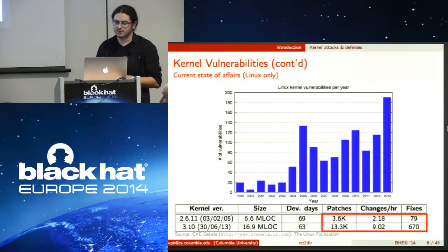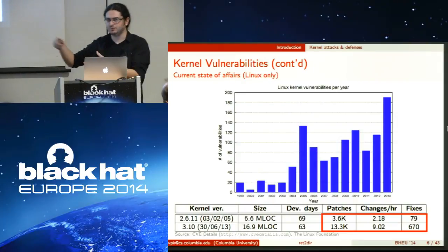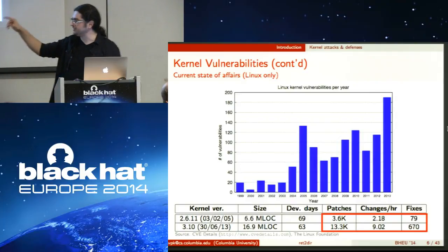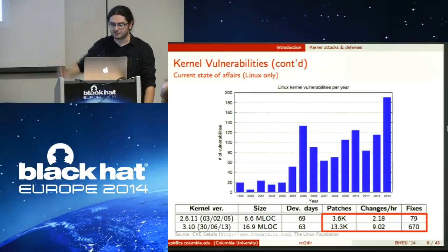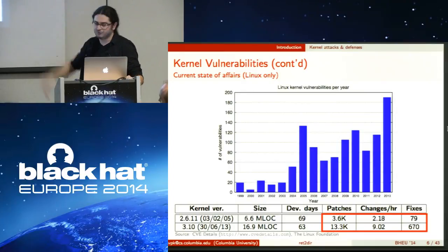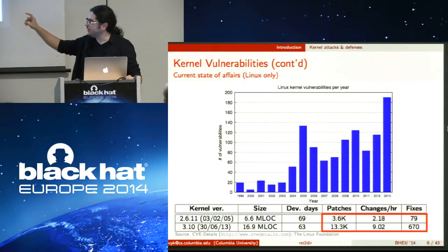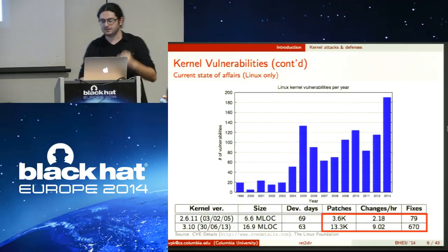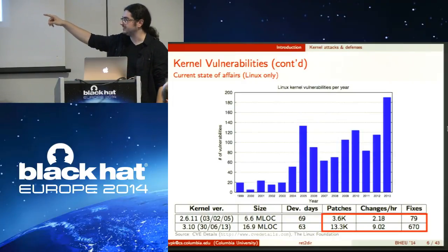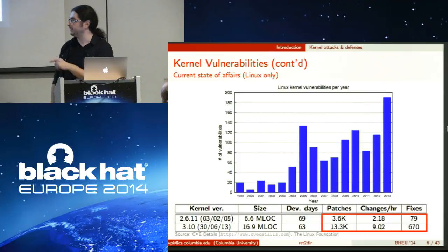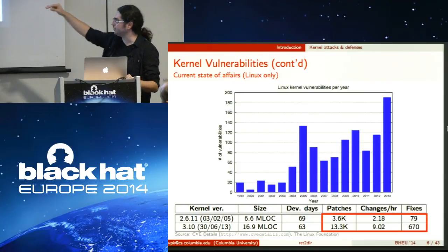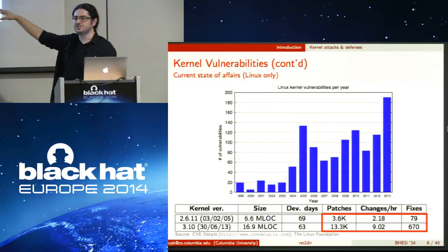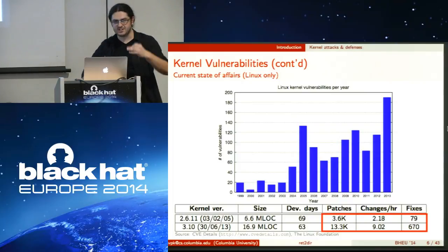The number of lines of code in Linux has increased a lot. Comparing kernel versions 2.6.11 from 2005 and 3.10 from 2013 — with roughly the same development cycle — the number of patches went from 3,600 to 13,300. That means going from roughly two changes per hour to nine or ten changes per hour. This is the part of code that guarantees the integrity of all security protections in user land.